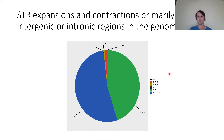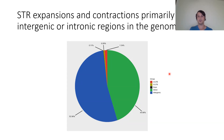Deb asked if there's a trend toward increased or decreased size in STR changes. Scott has seen a pattern where shorter STRs tend to expand. However, since we're mostly looking at smaller repeats, there's likely a bias — larger repeats generally trend toward contraction, so we're probably missing that part of the picture by being limited to shorter STRs within read length.